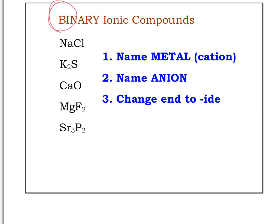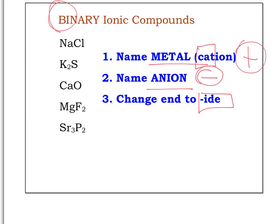The way we name binary ionic compounds is to name the metal first. The metal is also called a cation because metals like to lose electrons and become positive ions. Then we name the anion — the negative ion — and we change the ending of that anion to -IDE. Those are our rules for naming these ionic compounds.